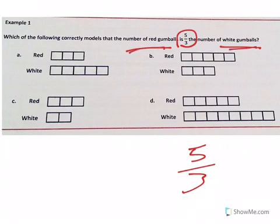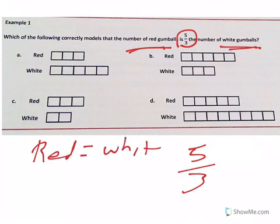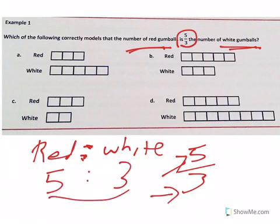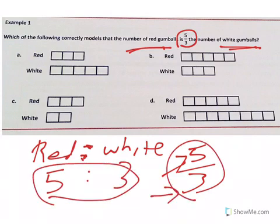If we're going red to white, red to white, we know red is going to be five because it's the first number. White is going to be three. So as a ratio, it's five to three. As a fraction, it's five-thirds.